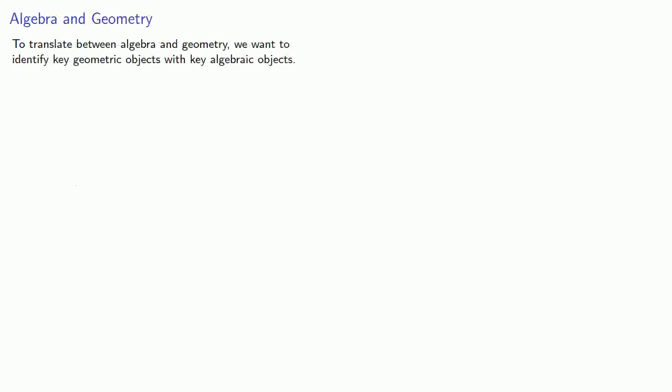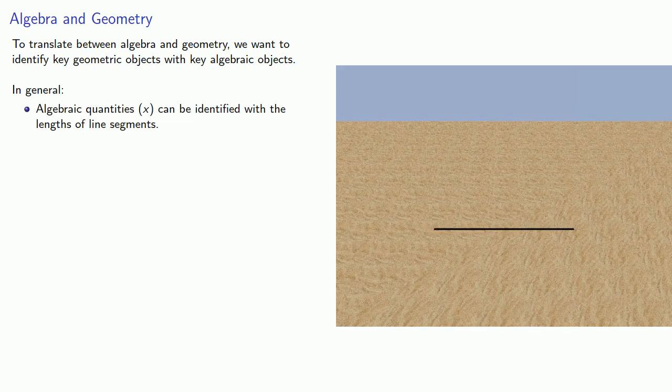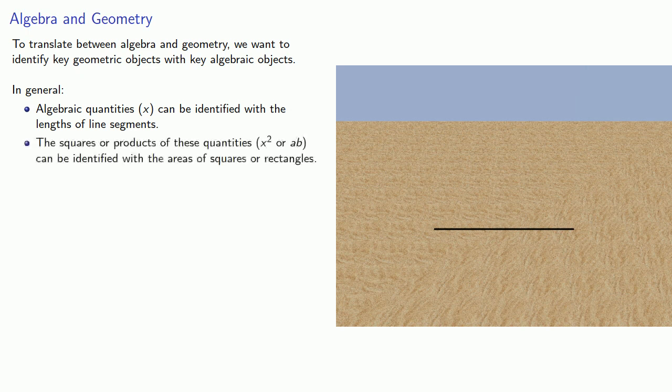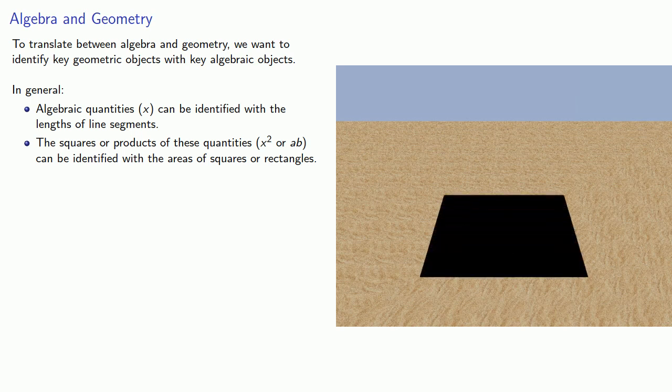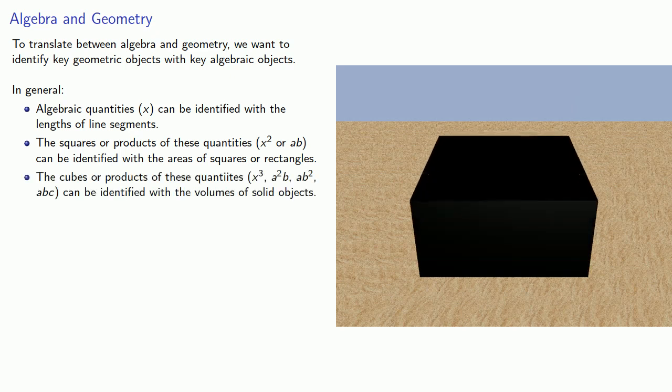To translate between algebra and geometry, we want to identify key geometric objects with key algebraic objects. In general, algebraic quantities x can be identified with the lengths of line segments. The squares or products of these quantities, x squared or ab, can be identified with the areas of squares or rectangles. Cubes can be identified with volumes of solid objects, and fourth powers are non-geometric. So there is an inherent limitation to geometric algebra.